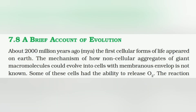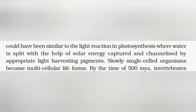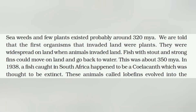A brief account on evolution: about 200 million years ago, the first cellular forms of life appeared on earth. The mechanism of how non-cellular aggregates of giant macromolecules could evolve into cells with membranous envelopes is not known. Some of these cells had the ability to release oxygen through reactions similar to the light reactions in photosynthesis, where water is split with solar energy captured by light-harvesting pigments. Slowly, single-celled organisms became multicellular life forms. By about 500 million years ago, invertebrates, seaweeds, and a few plants existed, probably around 320 million years ago.